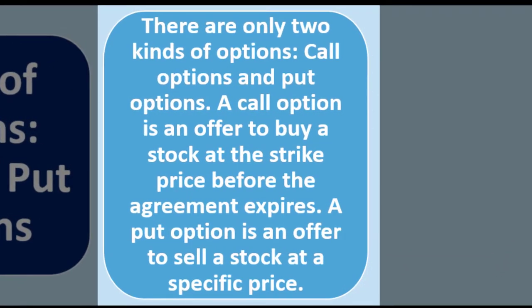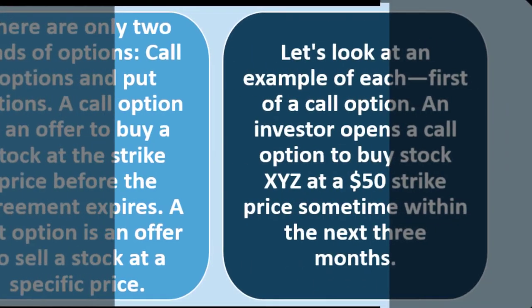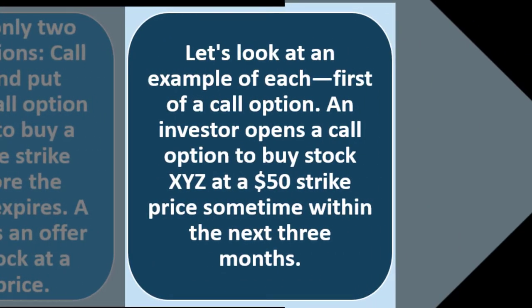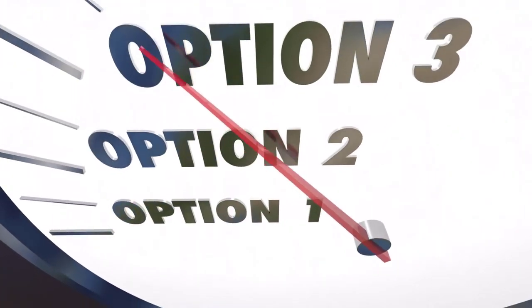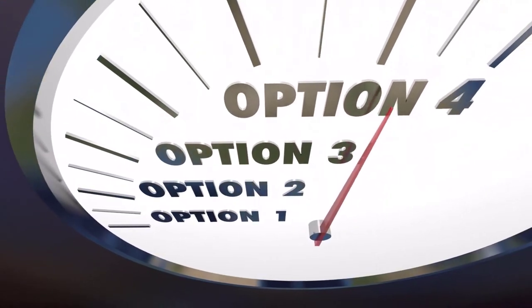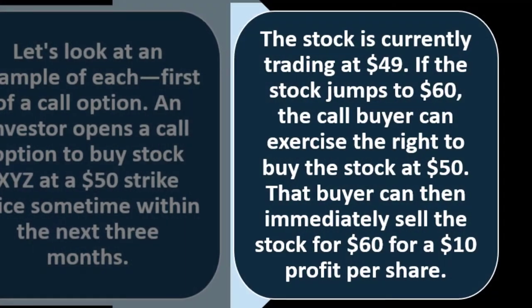There are only two kinds of options: call options and put options. A call option is an offer to buy a stock at the strike price before the agreement expires; a put option is an offer to sell the stock at a specific price. For example, an investor opens a call option to buy stock XYZ at a $50 strike price sometime within the next three months. The stock XYZ is currently trading at $49.